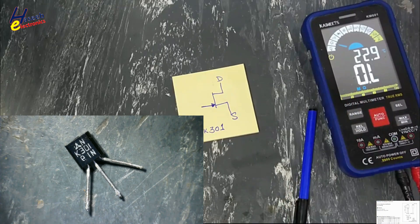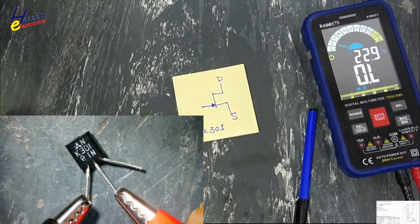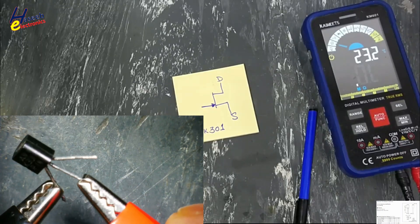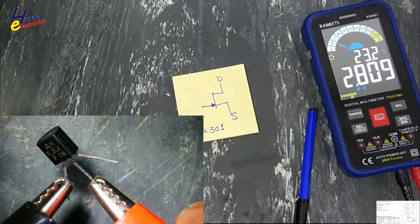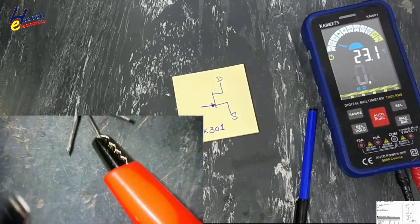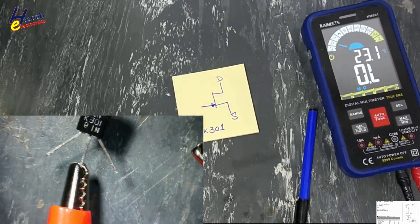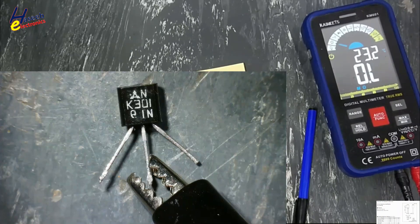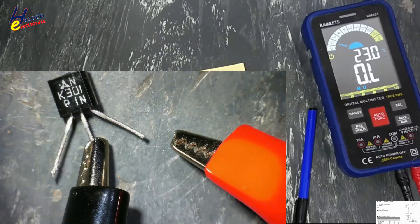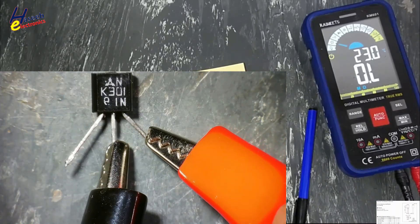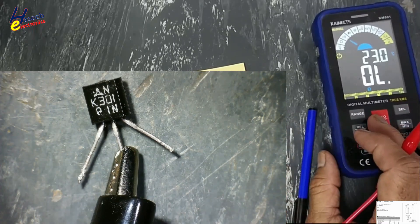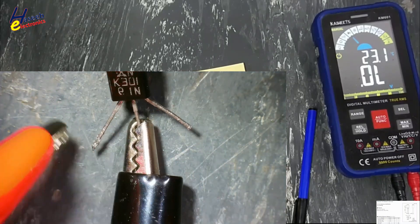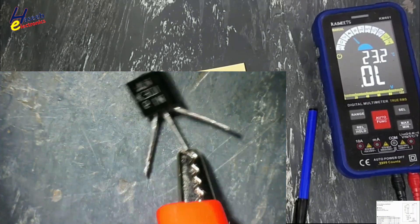Set the multimeter to resistance — we can also use the diode function. Pin 1 is drain, center is gate, right is source. Gate to source reads 2.8 megaohms. When we reverse the leads, it shows open circuit. It is an N-channel JFET.